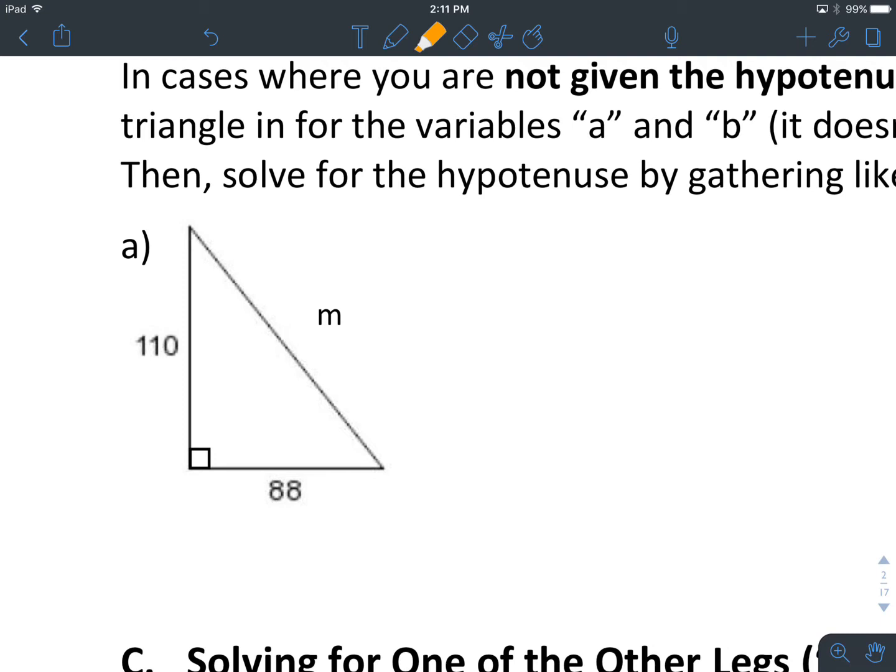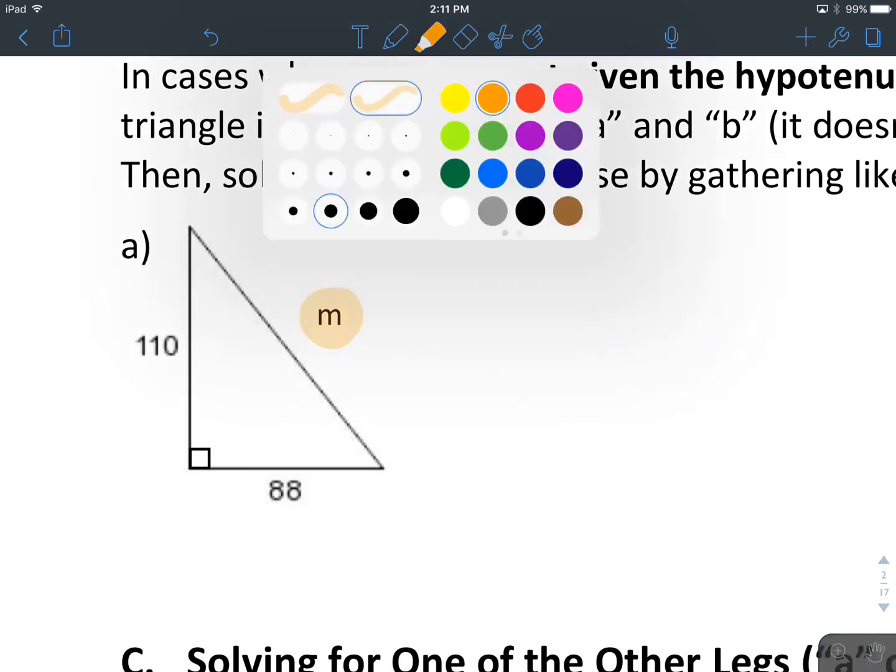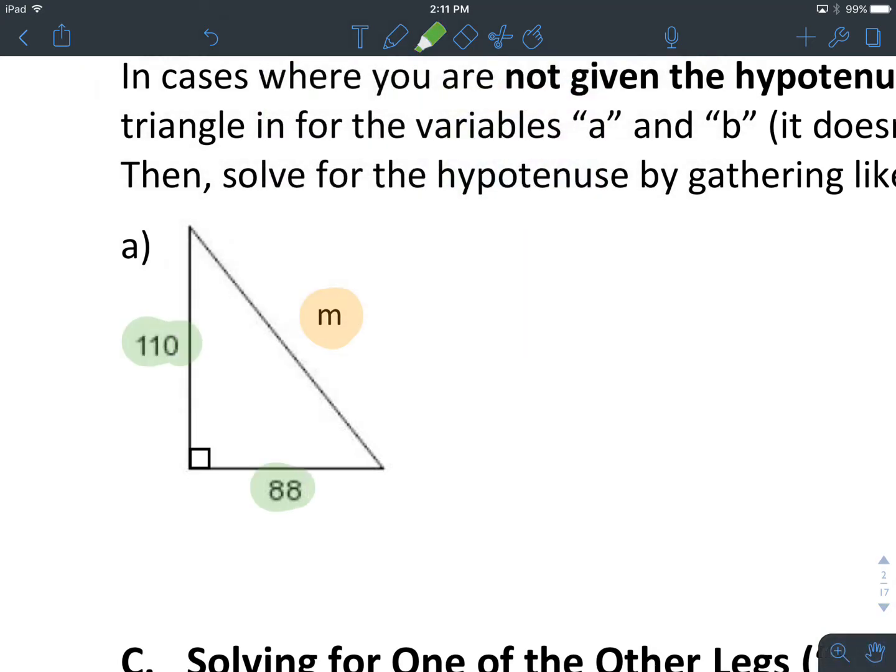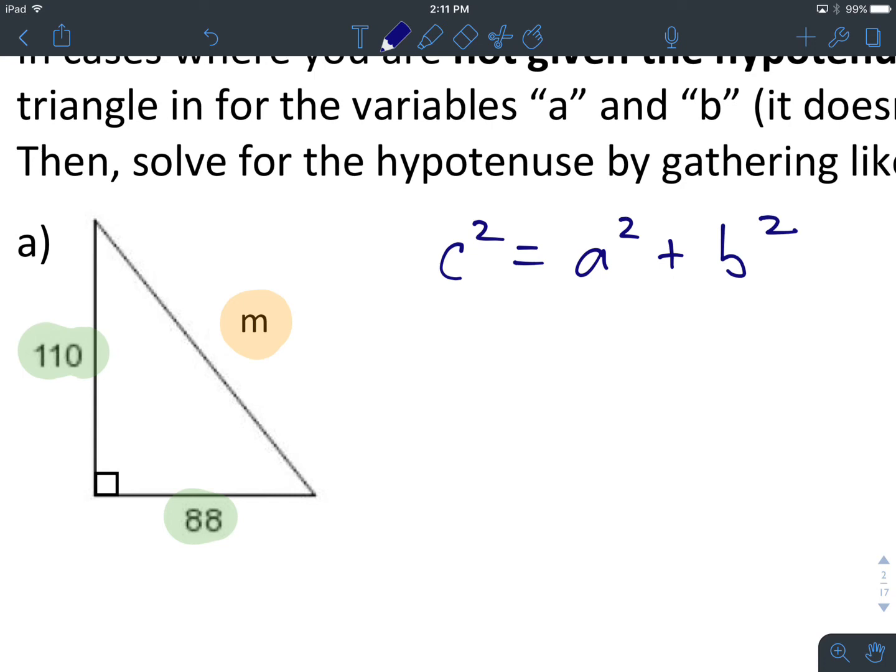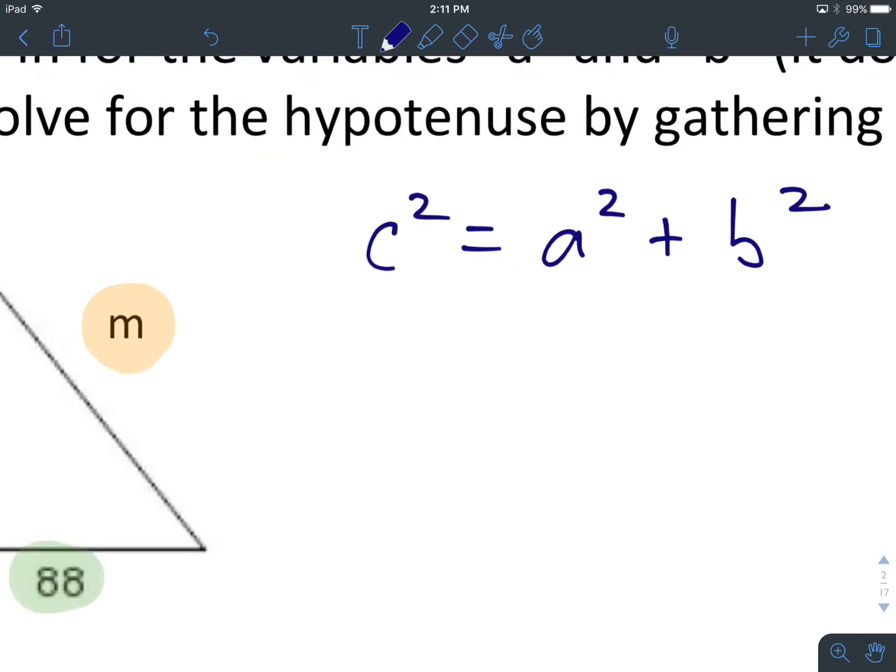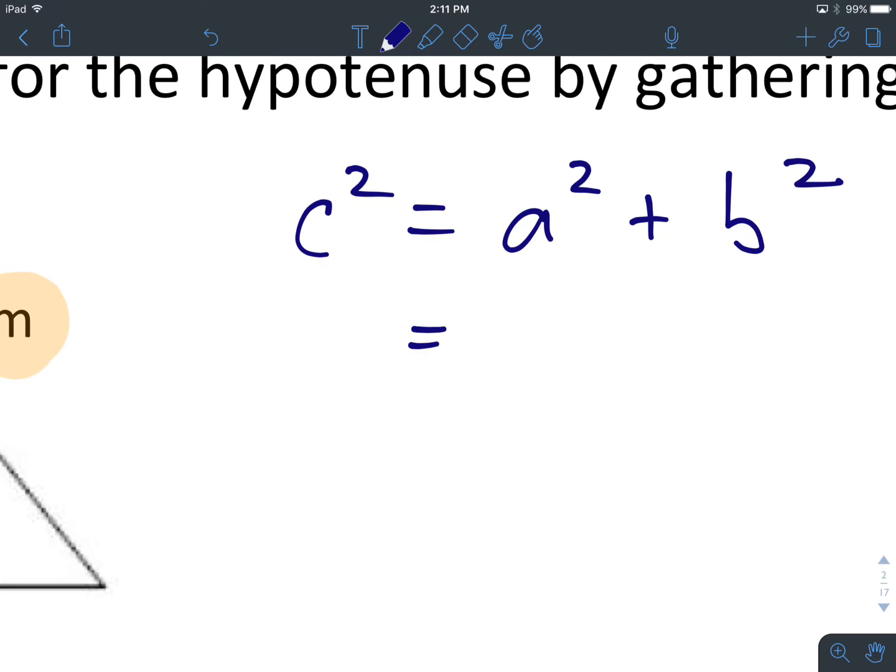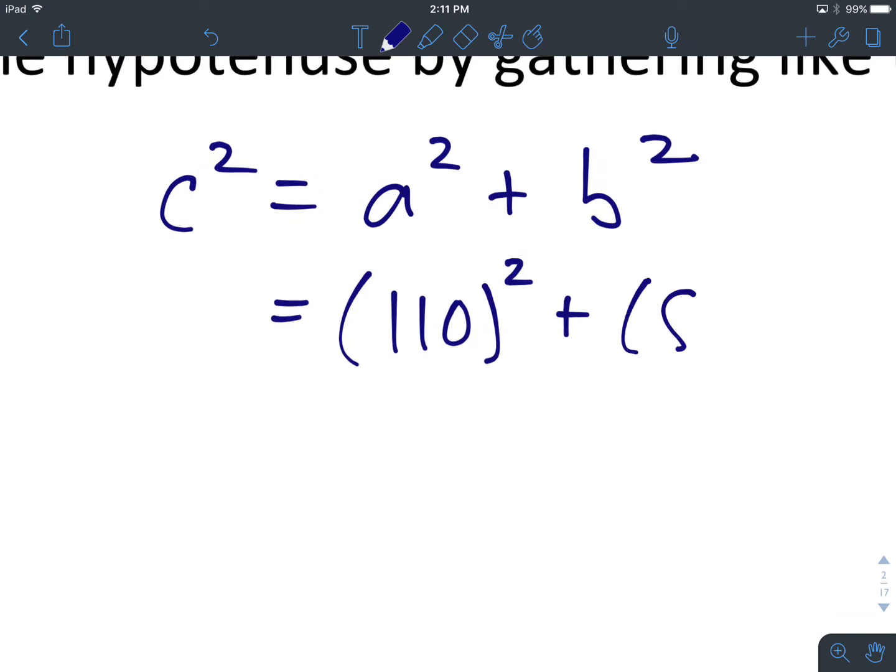First thing for us, we want to know, are we given the hypotenuse? And the hypotenuse here, represented by the variable M, is the variable that we're trying to find. So we don't have our hypotenuse, but we are given A and B as sides 110 and 88 respectively. So let's start by writing out our Pythagorean Theorem: c² = a² + b². Now we don't know what C is. C in this context is M. But we do know A and we do know B. So let's substitute those known values in right now.